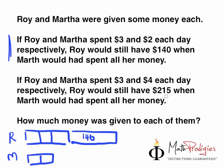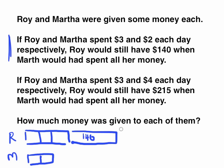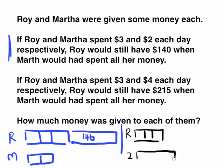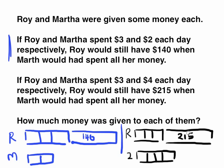This is case number 1. And this is for the second case — I'll use a different colour, black. In the second case, Roy spent the same amount, which is 3 units, but Martha spent 4 units. And Roy had $215 left.